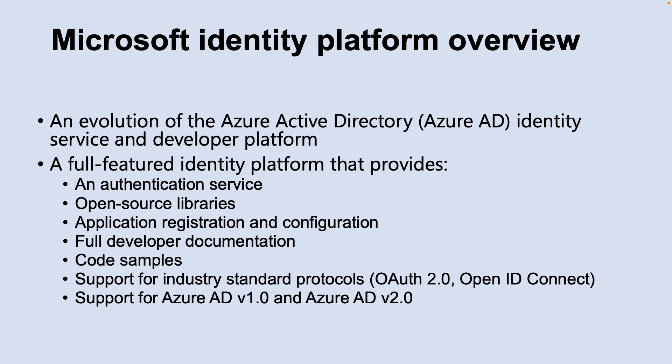With Microsoft Identity Platform version 2.0, you can expand your reach to users including work and school accounts, personal accounts, and your customers who bring their own email and social identity such as LinkedIn, Facebook, and Google via the Azure AD B2C offering. With the unified Microsoft Identity Platform, you can write code once and authenticate any Microsoft identity into your application for several platforms.